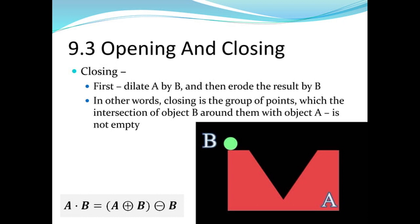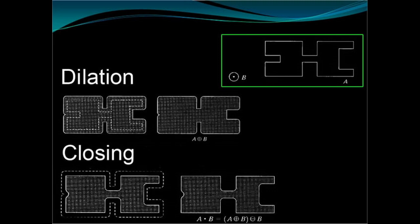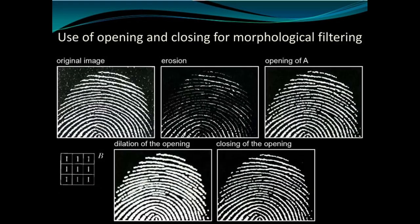Closing means first dilate A by B, then erode the result by B. Closing is the group of points for which the intersection of B around them with object A is not empty. Using opening and closing for morphological filtering — for example, on a fingerprint image: erosion erodes some values, opening opens some of the gaps, dilation thickens the lines, and closing closes the lines.